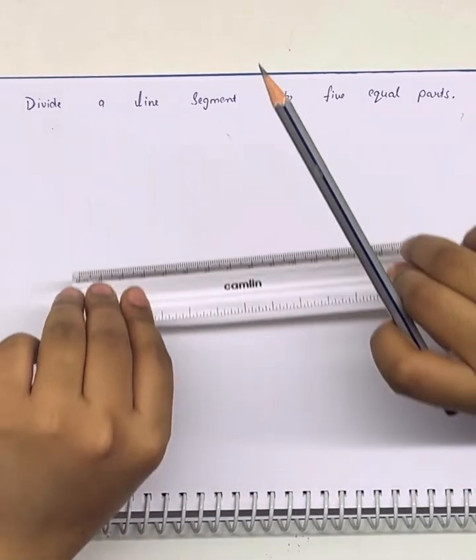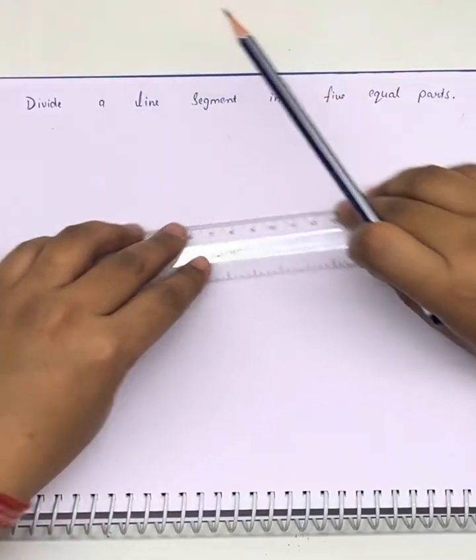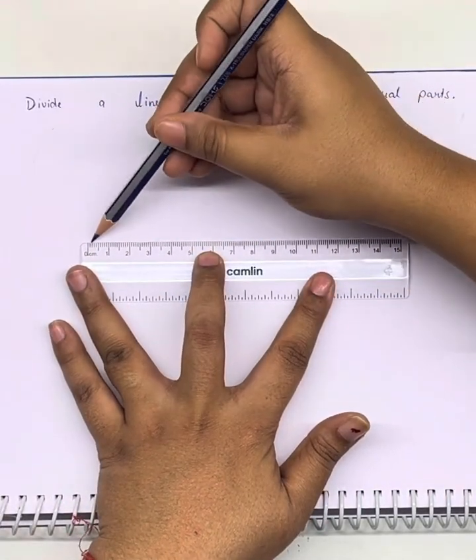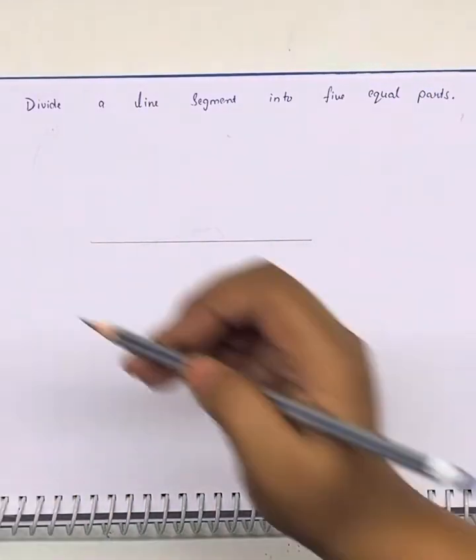We will draw a line of any length, any random length. This is line AB.